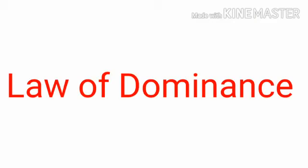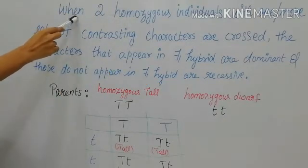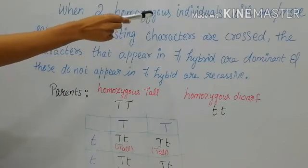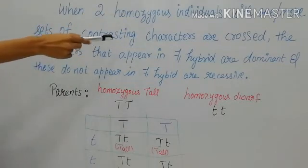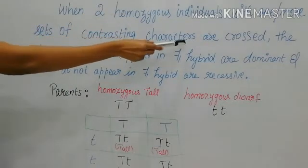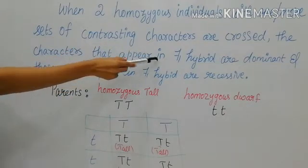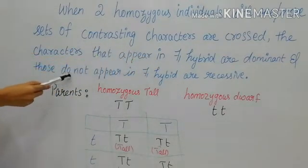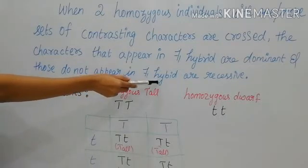First, we can see the Law of Dominance. This law states that when two homozygous individuals with one or more sets of contrasting characters are crossed, the characters that appear in the F1 hybrid are dominant, and the character which does not appear in F1 generation is recessive.